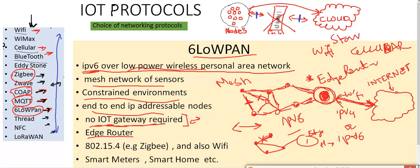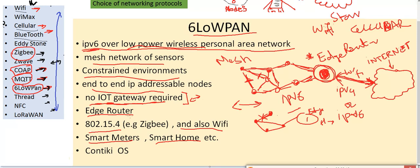You can also combine or integrate 6LoWPAN with other standards like 802.15.4 standard, for example Zigbee, and also you can integrate it with WiFi easily. The most common examples using this IoT protocol 6LoWPAN are smart meters and smart homes.